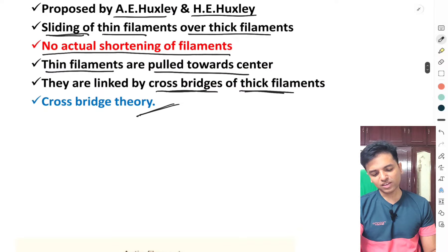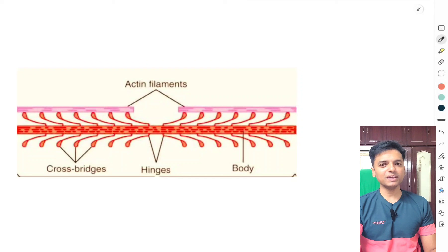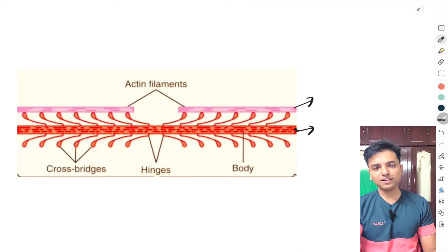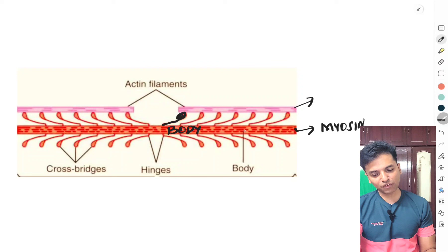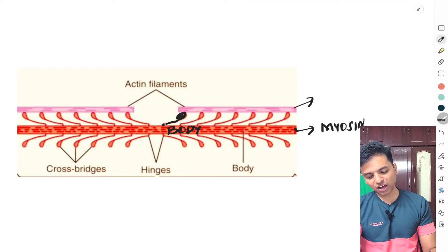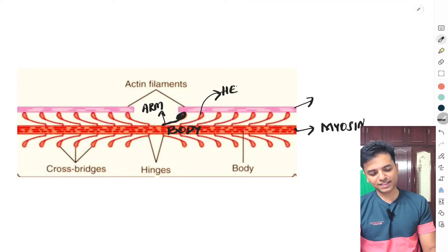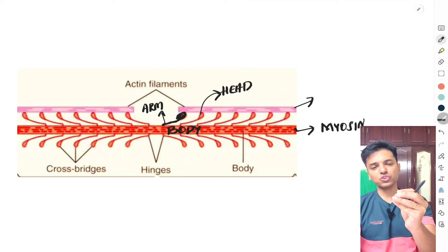Let's understand the meaning of a cross bridge. In the sarcomere, the thick filament is exclusively made of myosin. The body of the myosin has arms protruding out from it, and each arm is attached to a globular expanded portion called the head. The part of the myosin body that protrudes out is called the arm, and at the end of the arm is the head of the myosin.